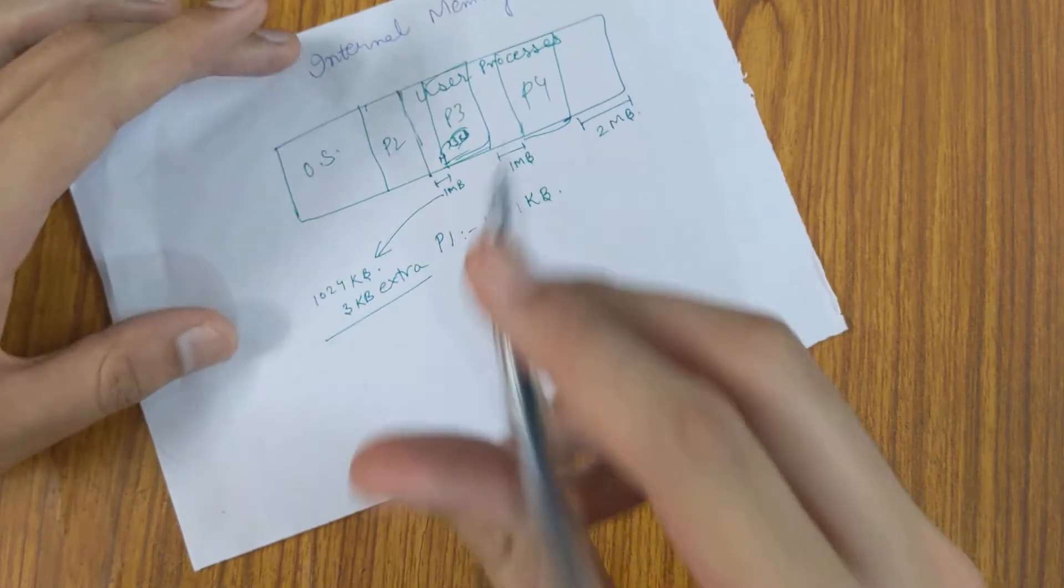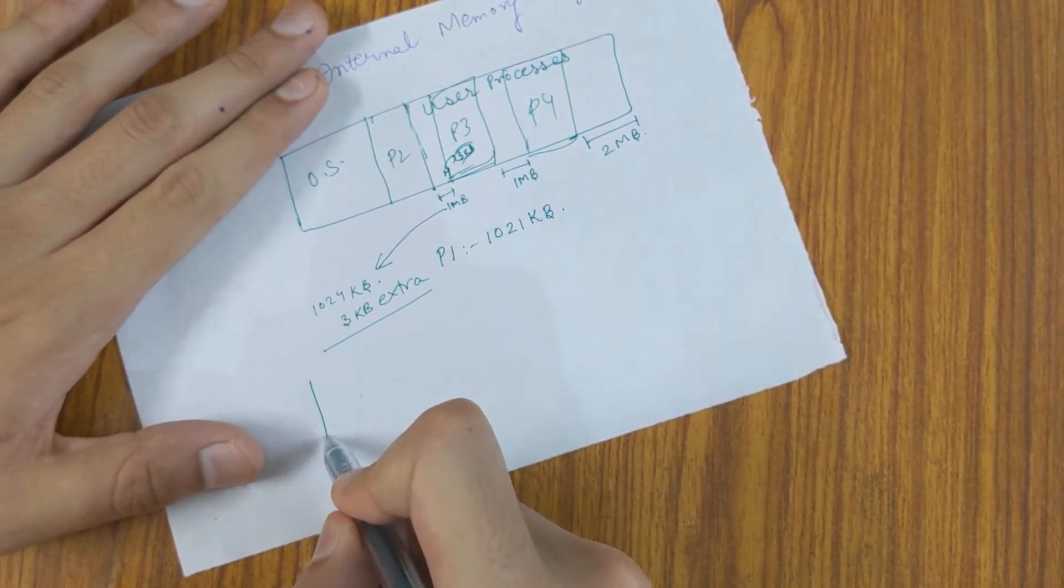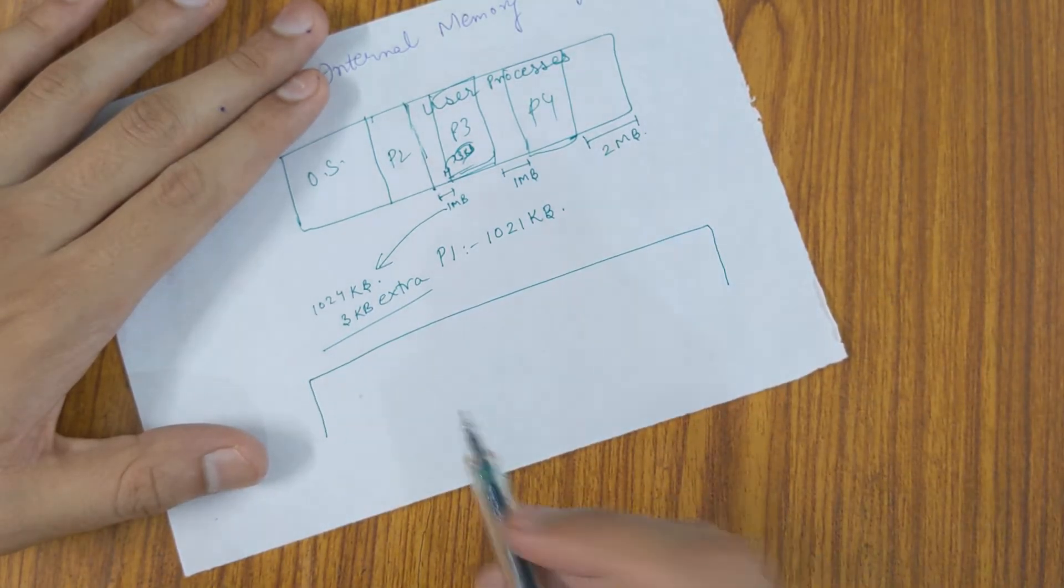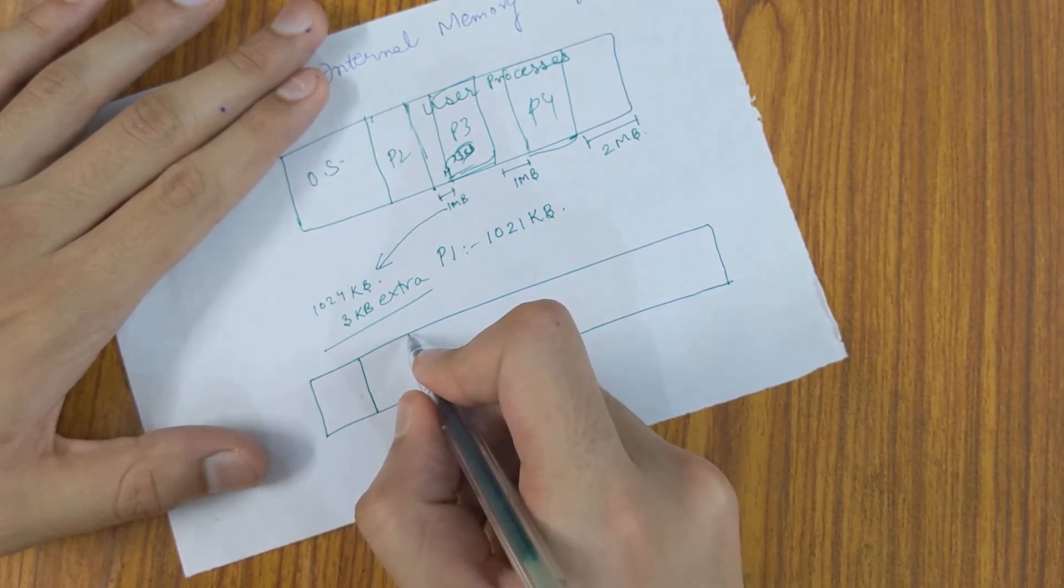So what we do is we keep our memory in form of some fixed size blocks, let's say 1 MB blocks.